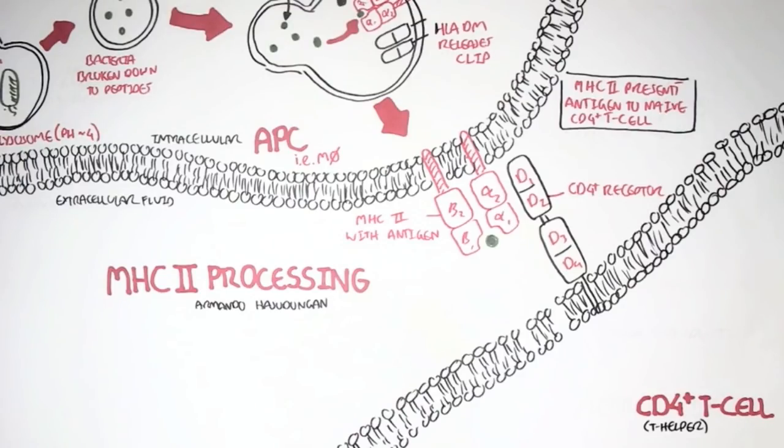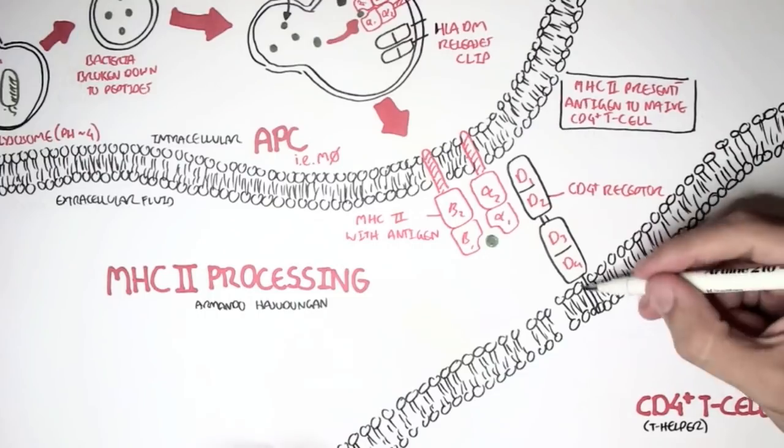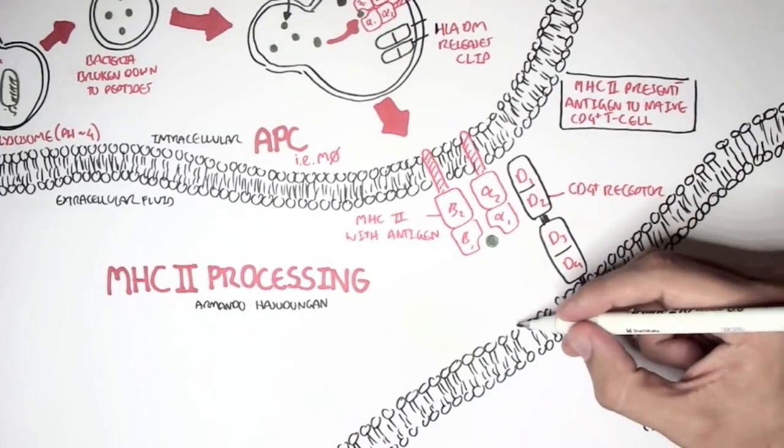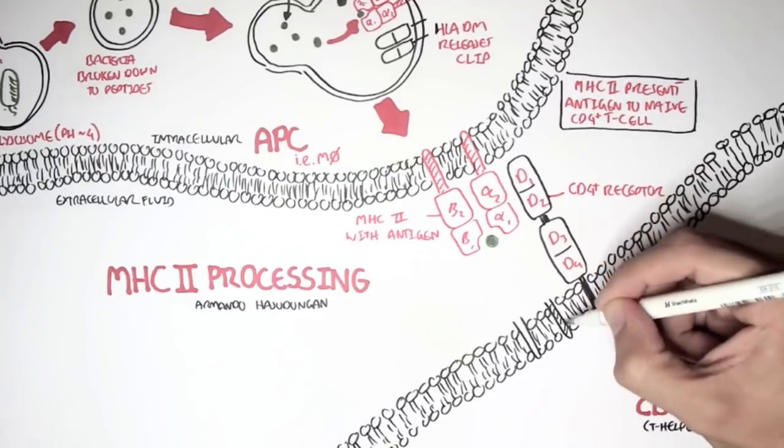The CD4 receptor is made up of segments D1, D2, D3, and D4. It will actually bind onto the alpha portion of the MHC class II.